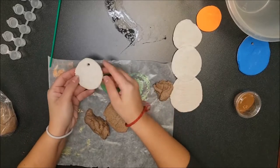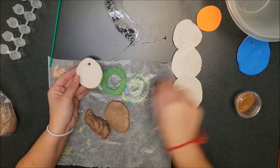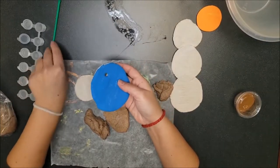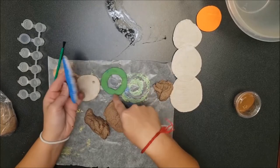Once your salt dough is all dry it won't be as brown. It'll come out a little bit lighter. And then you can take the paints that I give you and paint over the dough.